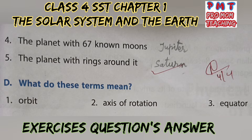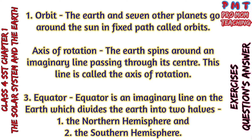What do these terms mean? Question 1: Orbit — The Earth and 7 other planets go around the Sun in a fixed path called orbits. Question 2: Axis of Rotation — The Earth spins around an imaginary line passing through its centre; this line is called the Axis of Rotation. Question 3: Equator — Equator is an imaginary line on the Earth which divides the Earth into two halves: the Northern Hemisphere and the Southern Hemisphere.